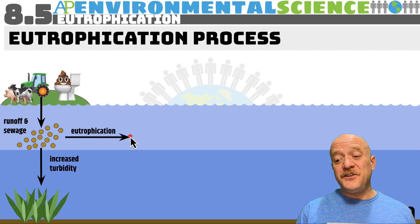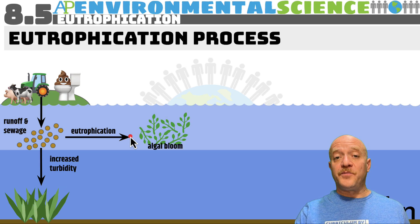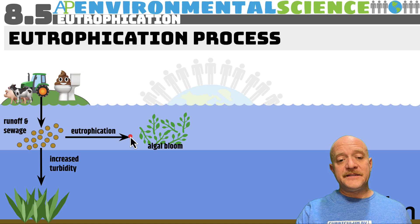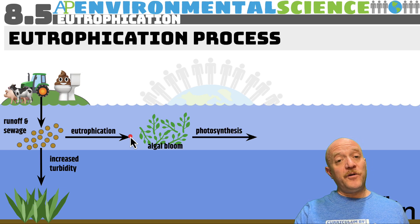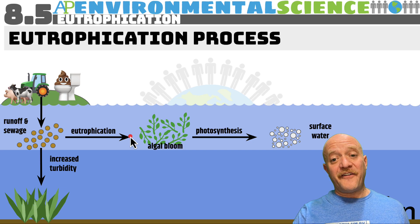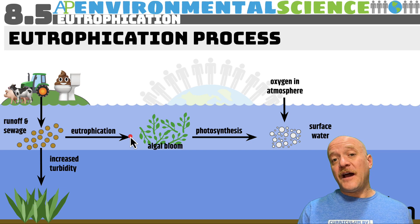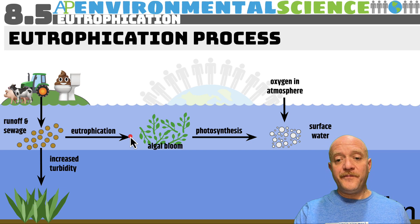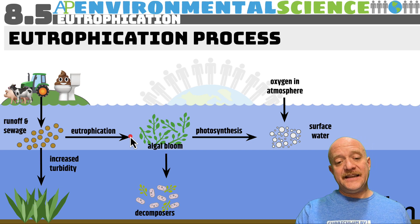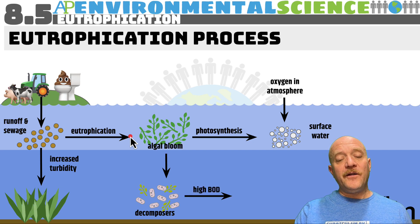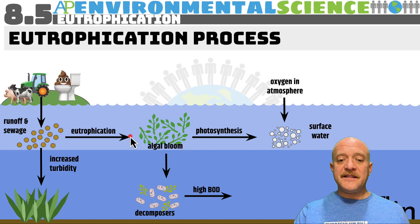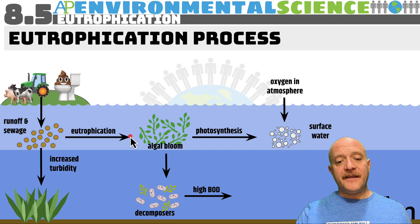The nutrients provided cause eutrophication, which leads to an algal bloom — a growth of algae that performs a lot of photosynthesis and releases a lot of oxygen into the surface water. Oxygen also enters from the atmosphere. However, when the algae dies, it decomposes at the bottom in the benthic area, creating a very high biological oxygen demand, meaning the bacteria breaking it down consume most of the oxygen present in the benthic areas.